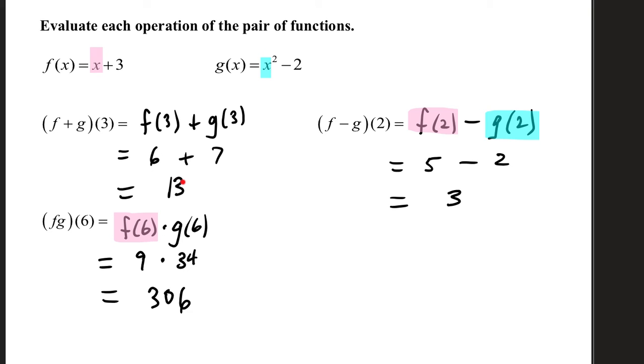f minus g of 2, that's f of 2 minus g of 2. f of 2 is 2 plus 3, which is 5, minus g of 2 is 2 squared minus 2, which is 2. 5 minus 2 is 3.